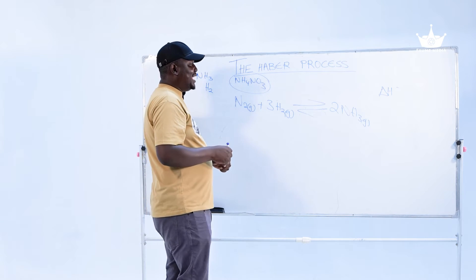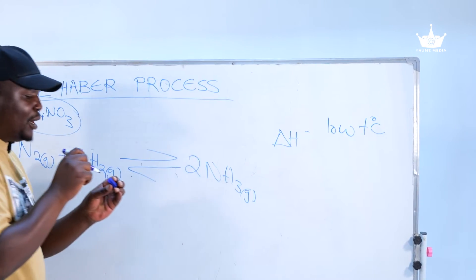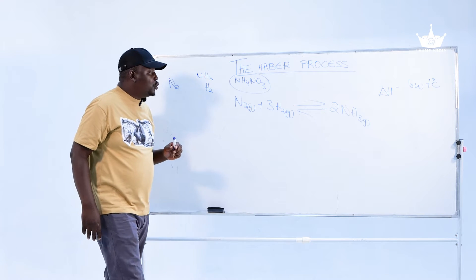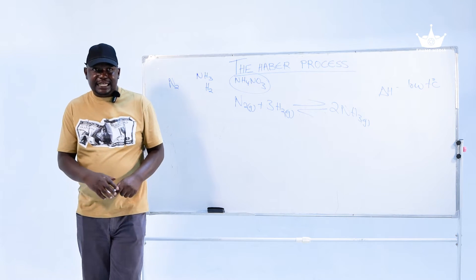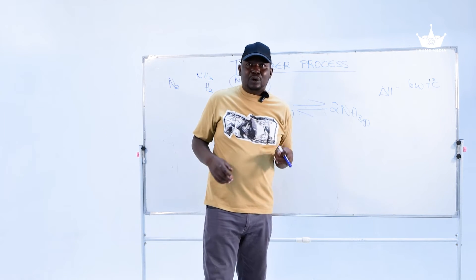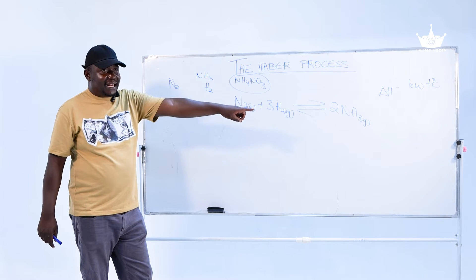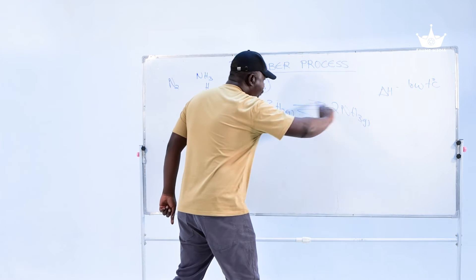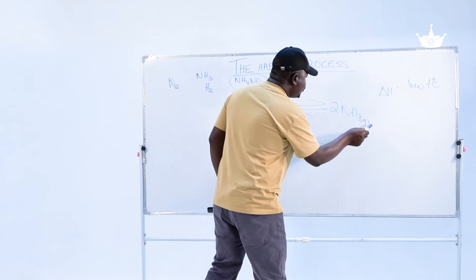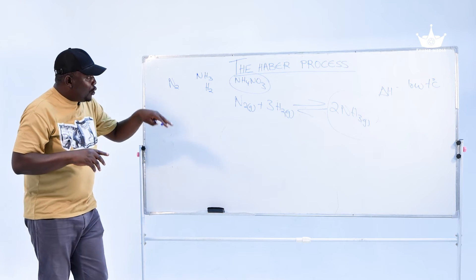Since this reaction is delta H negative exothermic, there is a need for a low temperature. All the conditions we are going to apply to get a high ammonia yield are dependent upon what is called Le Chatelier's principle. Le Chatelier's principle states that if a system in equilibrium is disturbed, it will shift in the direction to counter that disturbance. So if we employ a low temperature on an exothermic reaction, the forward reaction is favored and we get a high yield of ammonia.